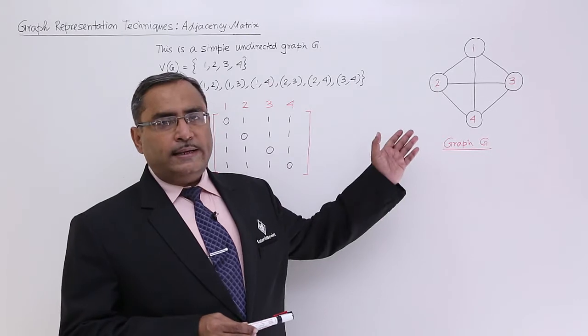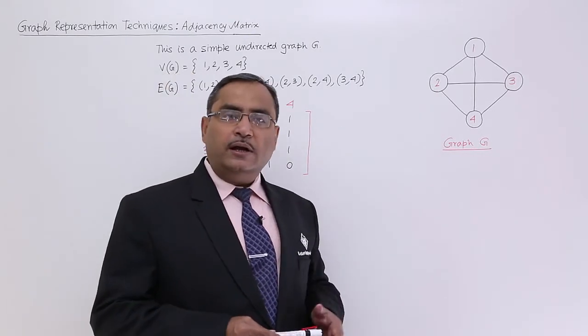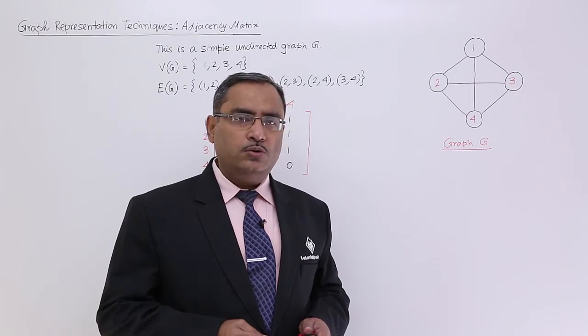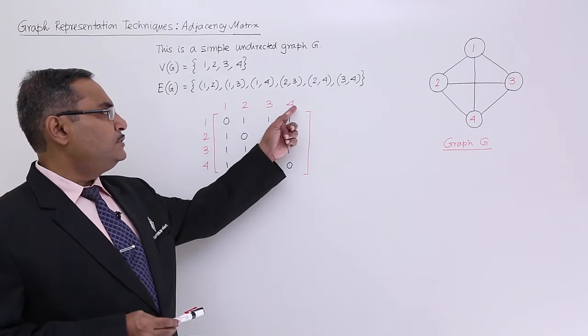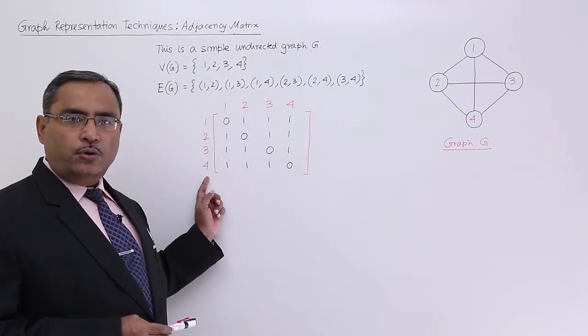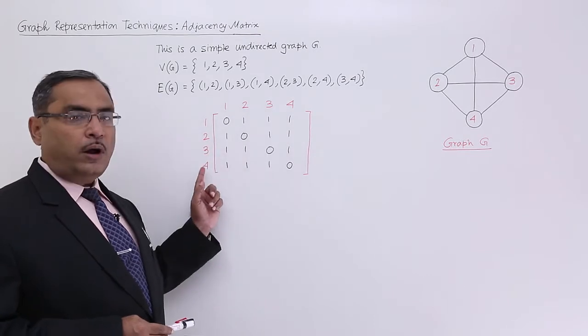Let's go for one example for better understanding. Let us consider this particular graph - it has 4 nodes: 1, 2, 3, and 4. So its respective adjacency matrix will have 4 columns and 4 rows. These are 1, 2, 3, 4 and 1, 2, 3, 4.